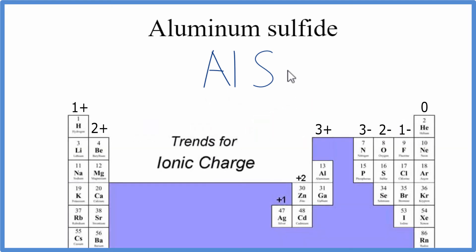For ionic compounds, we need to take into account the ionic charge. Aluminum has an ionic charge of 3 plus, sulfur has an ionic charge of 2 minus.